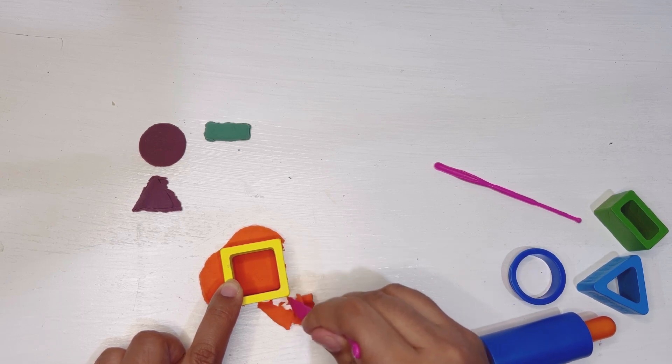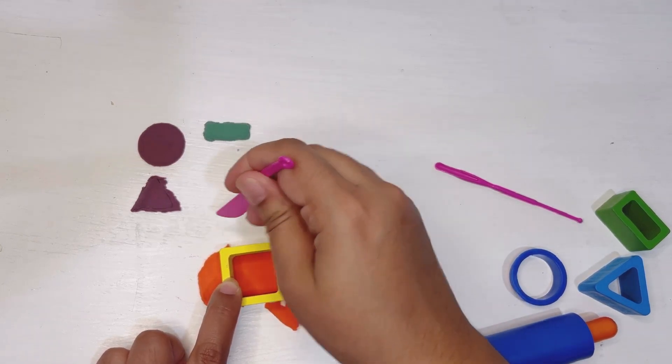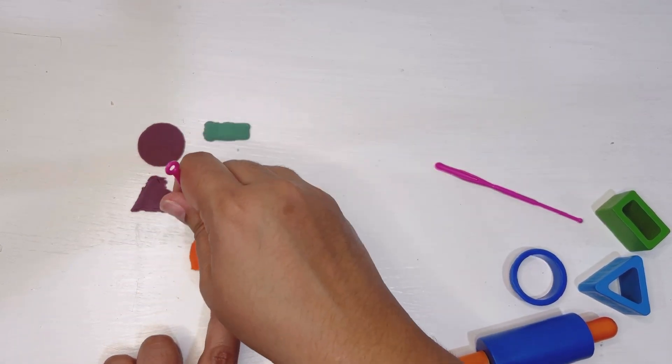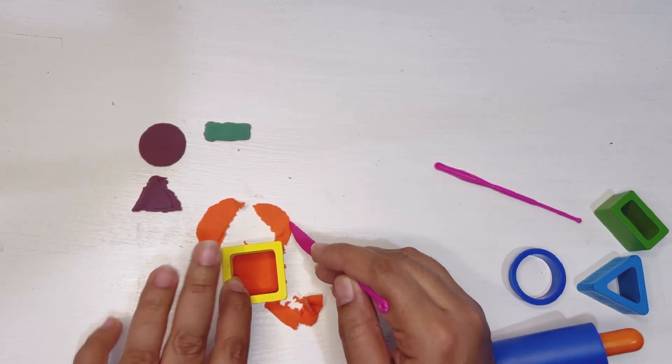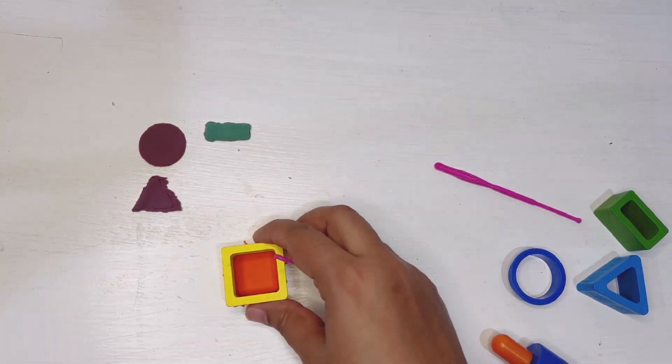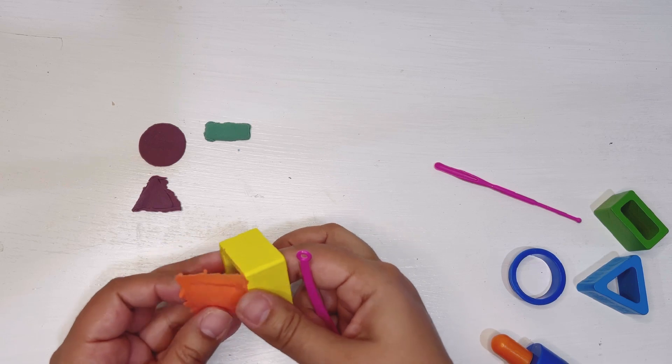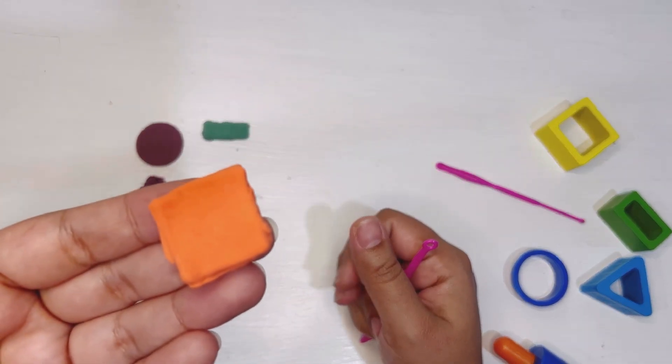Put the extra play-doh on the side to make a perfect square. Here you go, almost done. Here we have the final look of orange square.